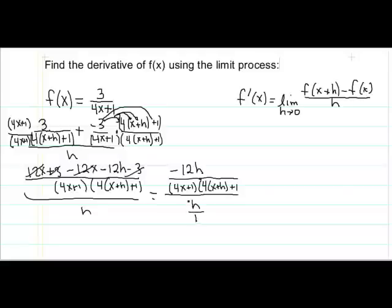And so we now have negative 12h over our common denominator. And that's over h. I am going to turn that into a fraction. We now have a complex fraction. So we can get rid of the fraction on the bottom by multiplying the numerator by our reciprocal of that. So again we change division of h to multiplication of 1 over h. That allows us to cancel our h here. And our simplified part, now this is without the limit, is negative 12 over 4x plus 1 times 4 times x plus h plus 1.